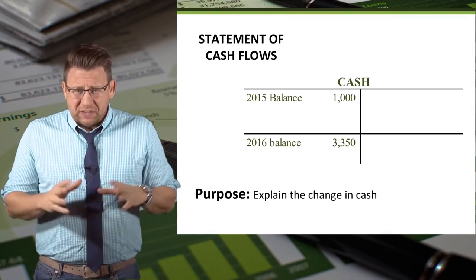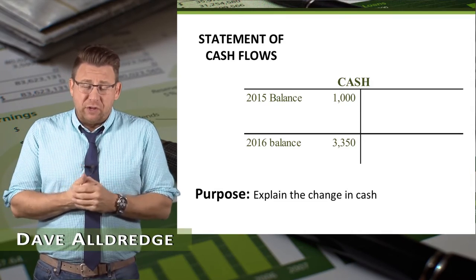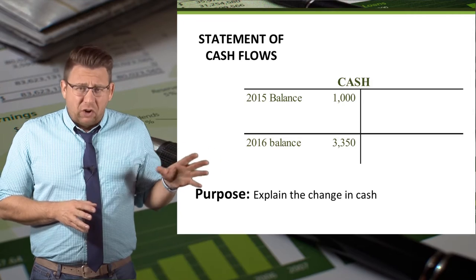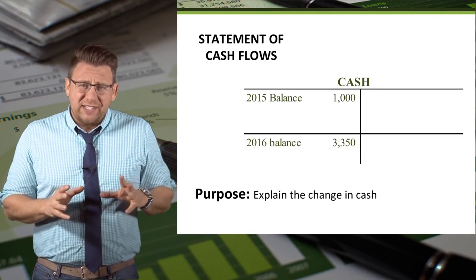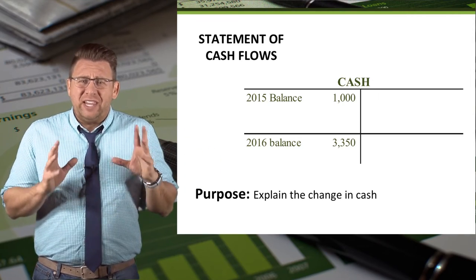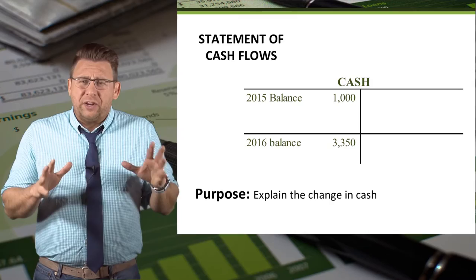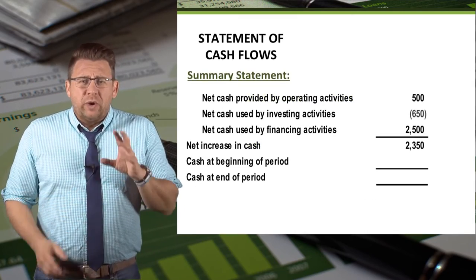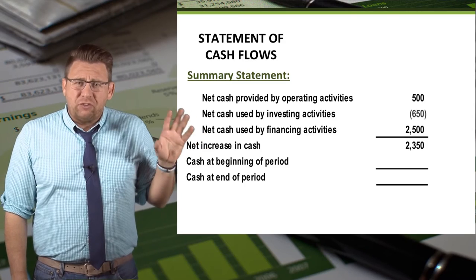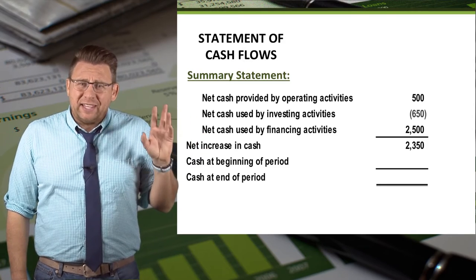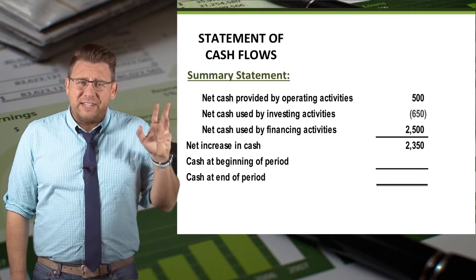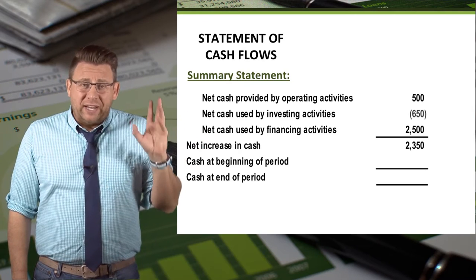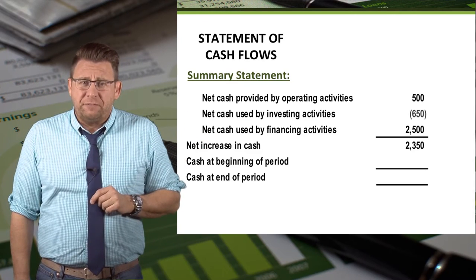Recall that one of the primary purposes of the statement of cash flows is to explain the change in cash. As you can see here, all the balance sheet tells us is that cash increased $2,350, but it doesn't tell us why. Here we have a summary statement that shows the net cash flows from operating, investing, and financing activities — you can see that they result in a net cash increase of $2,350.